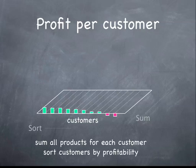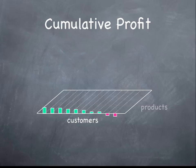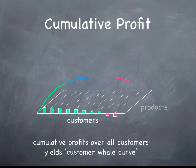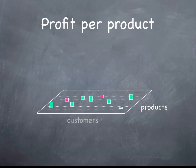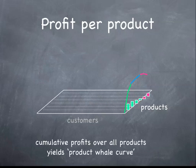We can furthermore aggregate this information and plot the cumulative profit per customers to obtain the so-called whale curve, which shows the same information in a slightly different format. Note that we can aggregate this two-dimensional space of customers and products also in the product dimension, by simply aggregating over all the customers who bought each particular product, then sorting and doing the cumulative plot for the so-called product whale curve.